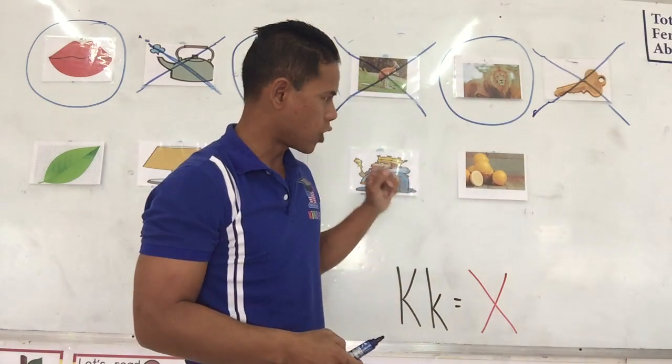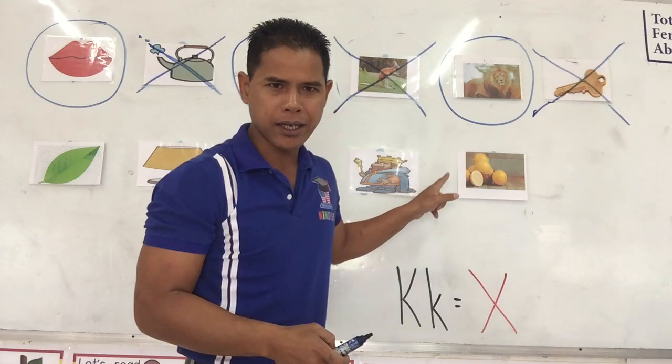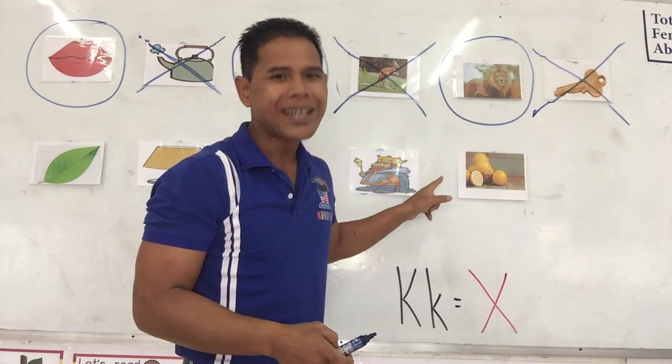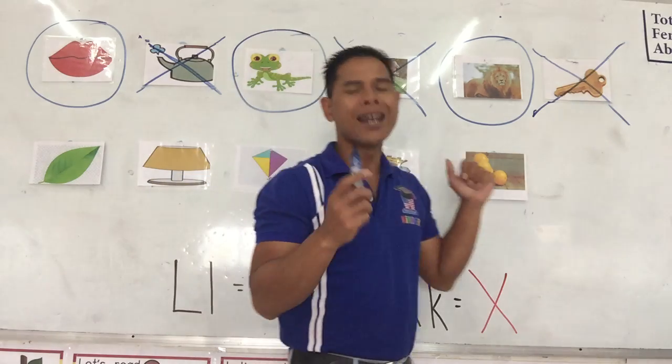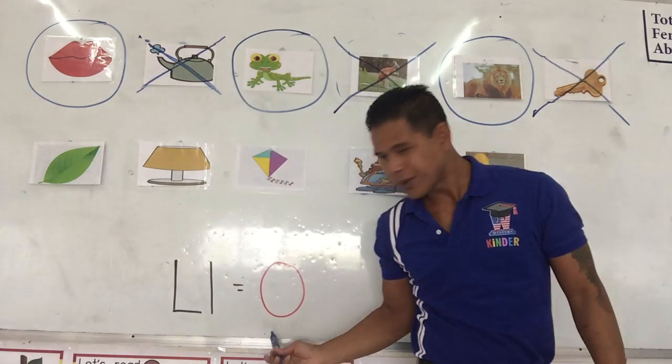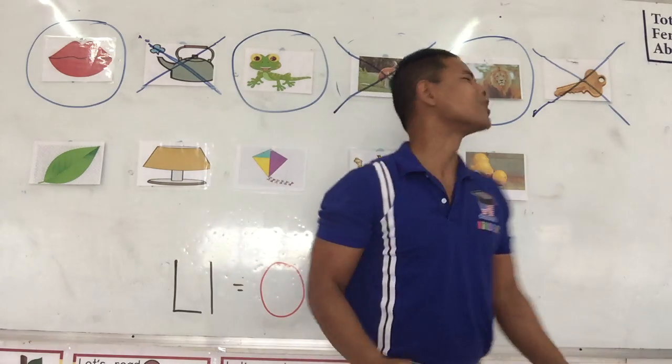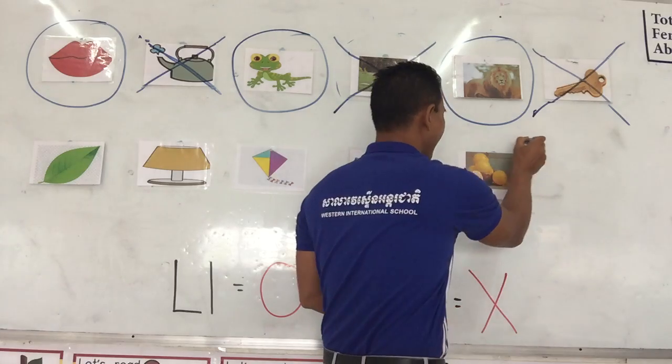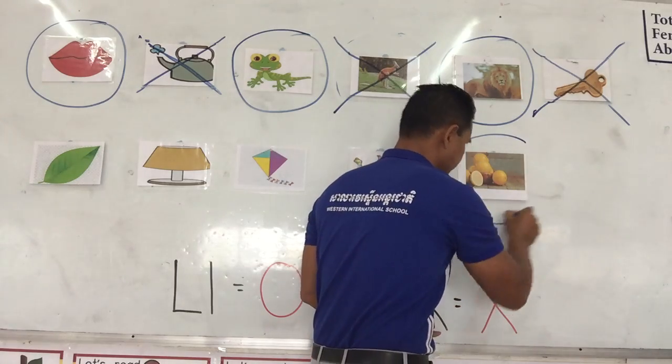Next one: lemon. Lemon. Yes, letter L. So we circle it.